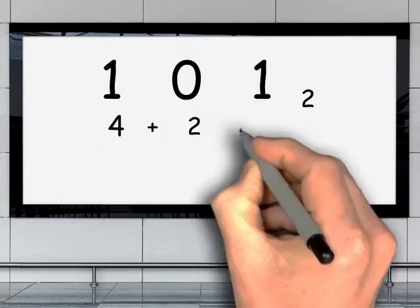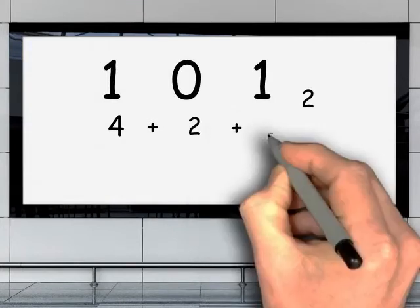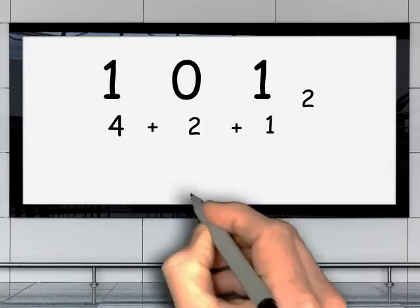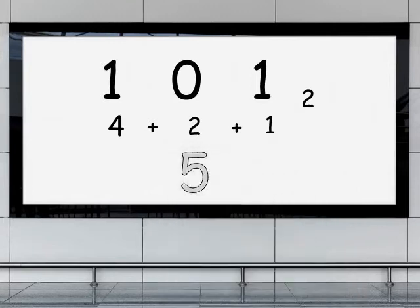Then get the sum of the numbers that are on in binary. In this given example, we will not add 2 because it is off. We will get 5 as the sum of on bits. This means 101 binary is equal to 5 octal.